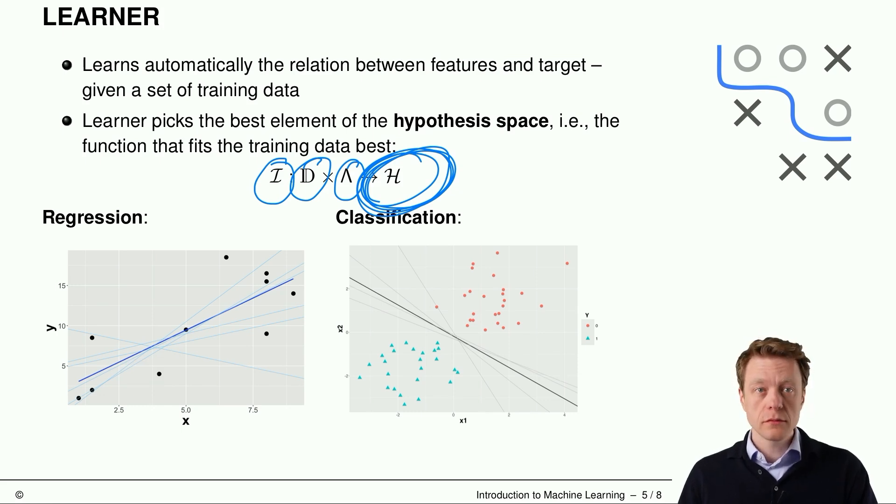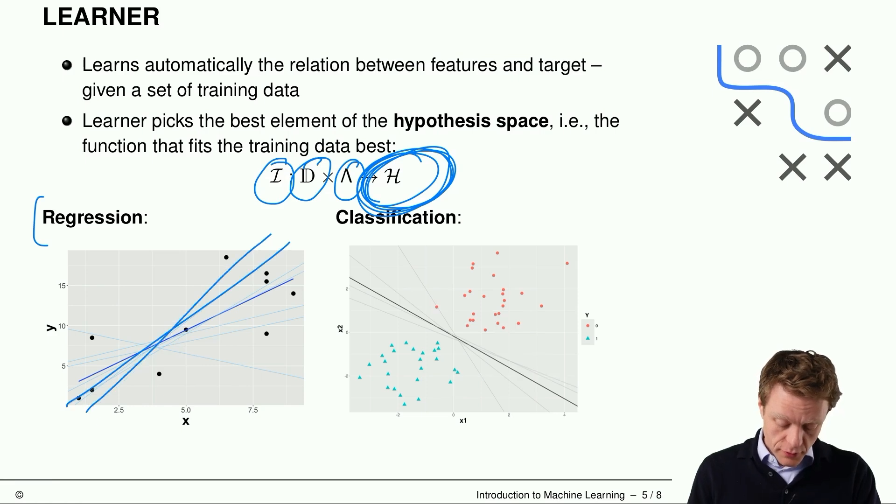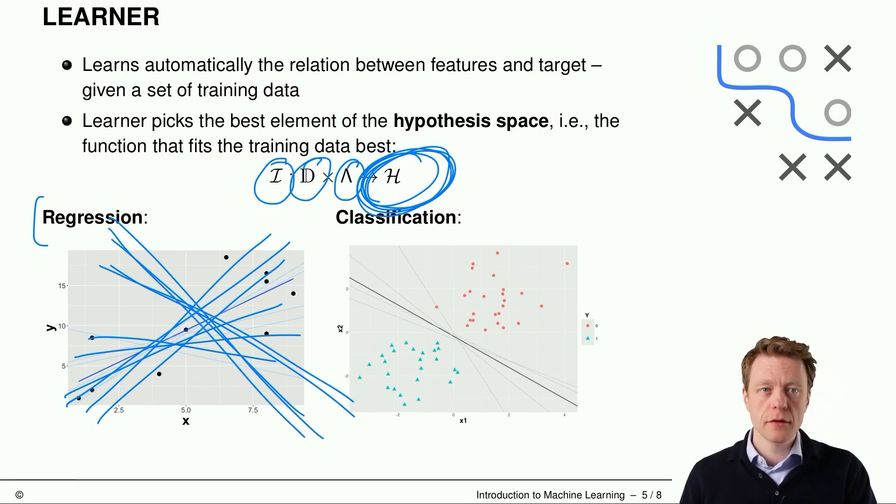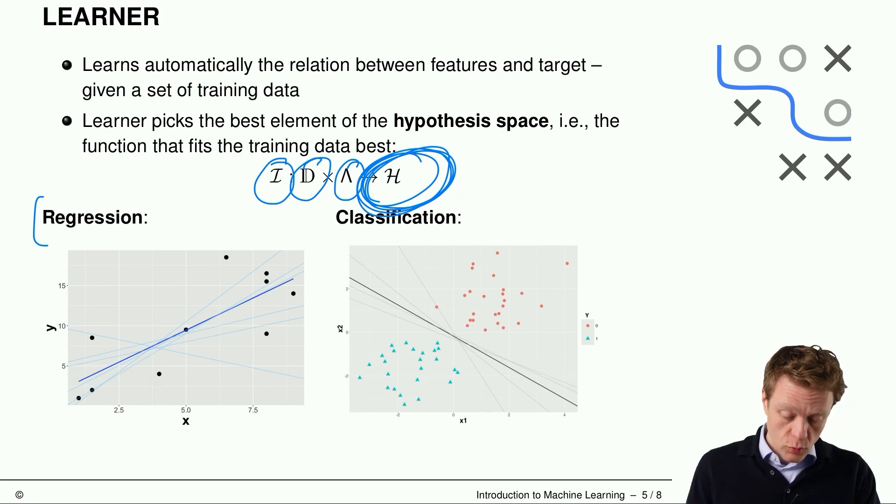So if we go to the regression example here, all those light, smaller, thinner blue lines are possible functions. You could also have functions like these, but they are obviously very bad for the data points. And all these functions are members of the hypothesis space. And the learner tries to pick the best functions of all these, which is the thicker blue line on the left side.